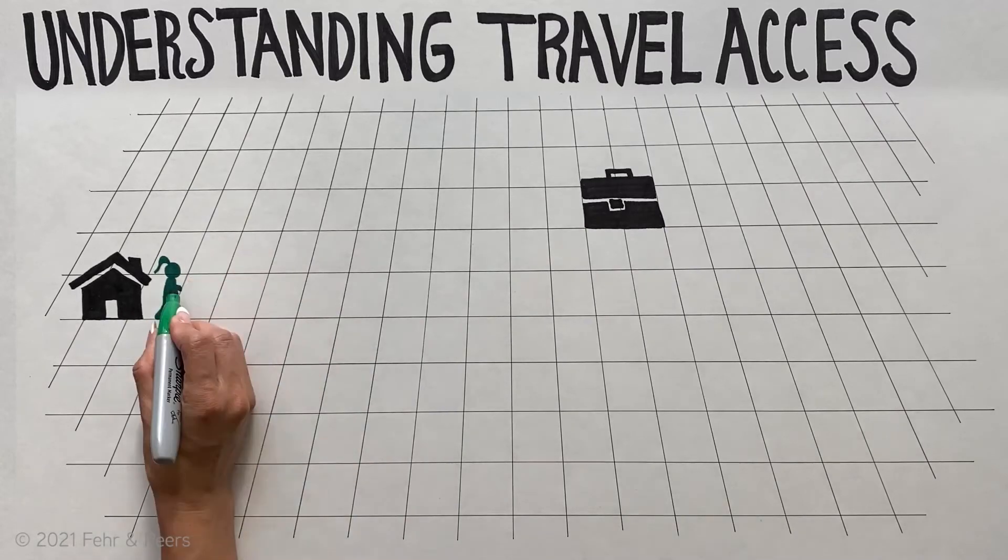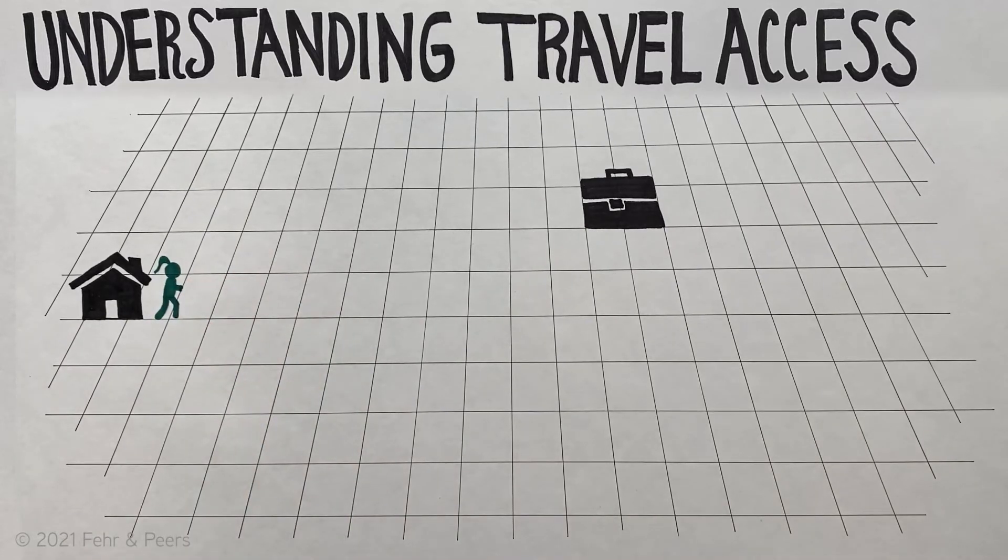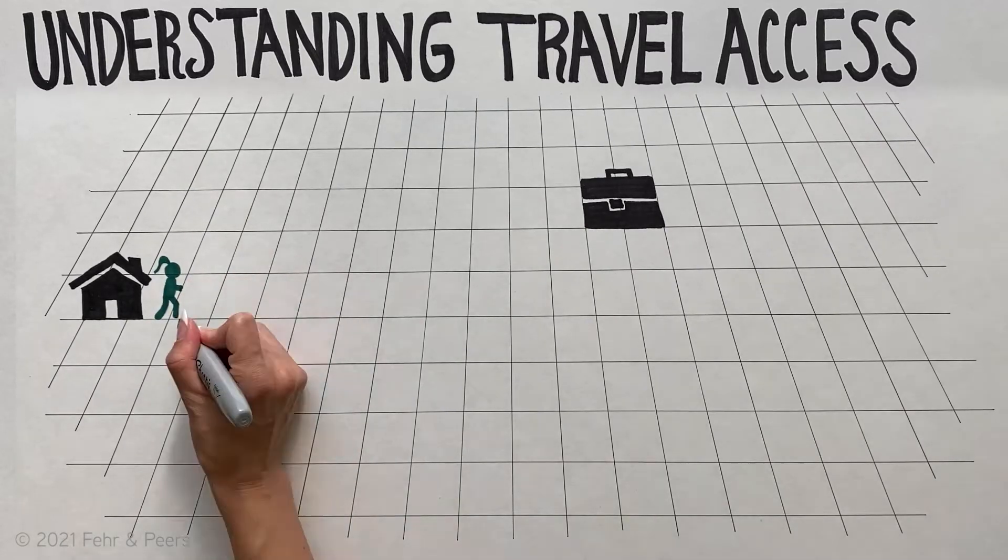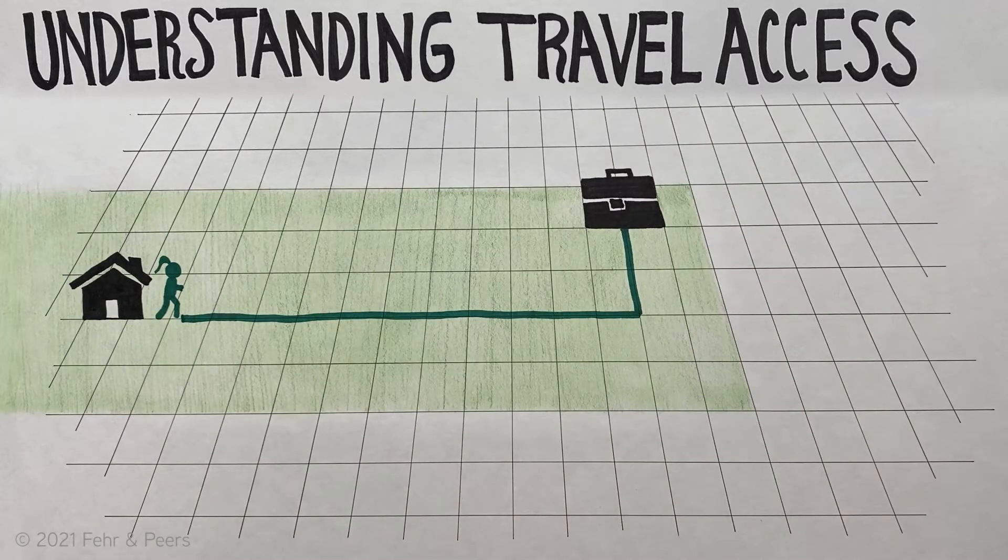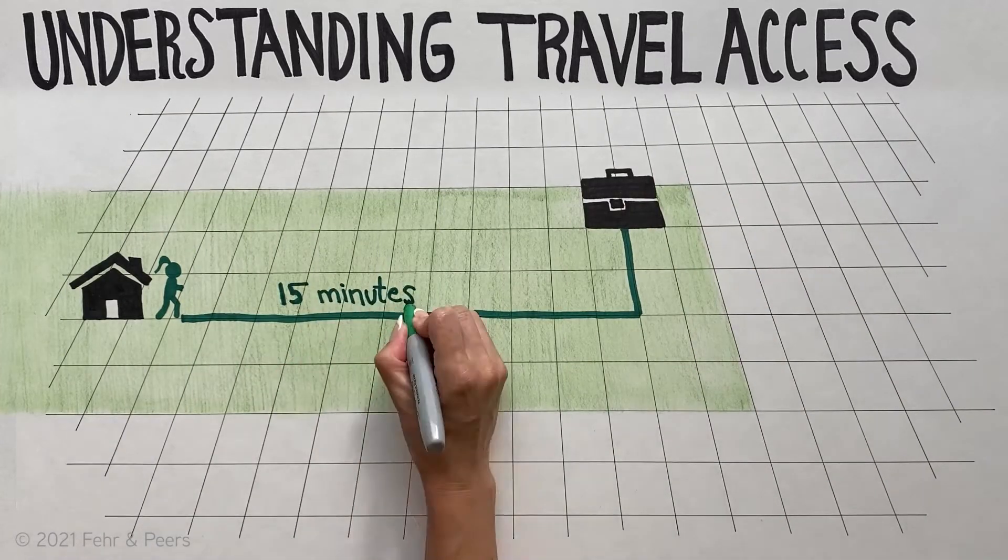To demonstrate travel access, let's look at Ava's work commute. Ava does not own or have a car available for traveling to work. From her home, it takes Ava 15 minutes to walk to work.